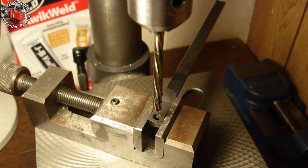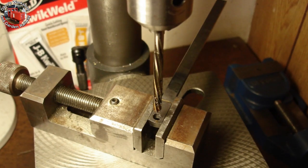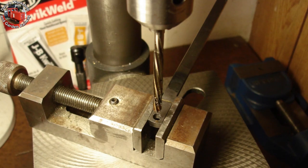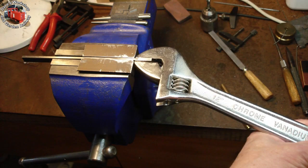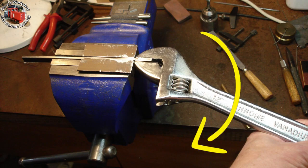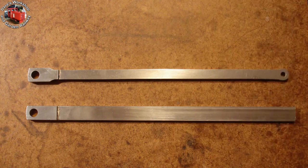Reaming the 7/32nds crank pin hole. The bench drill is set at its lowest speed. Cutting oil has been brushed onto the reamer. A small adjustment needed making in this axis. One day's work.